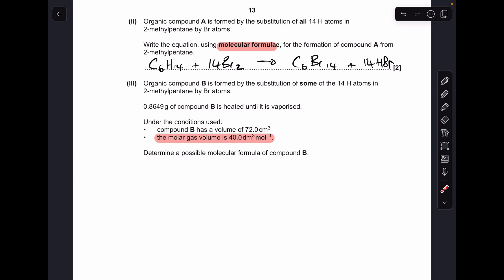Moving on to the last part of the question, the calculations. You see I've highlighted the key bit here. The molar gas volume at the conditions used for this reaction is 40 decimeters cubed per mole, not the usual 24 decimeters cubed per mole. So to work out the moles of B, we take the volume given, but be careful, it's in centimeters cubed, whereas the molar gas volume given is in decimeters cubed per mole. So we're putting that into decimeters cubed, dividing it by that molar gas volume.